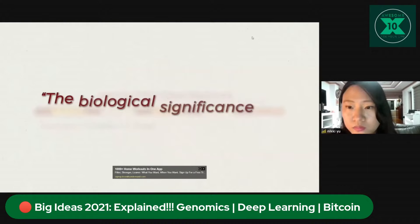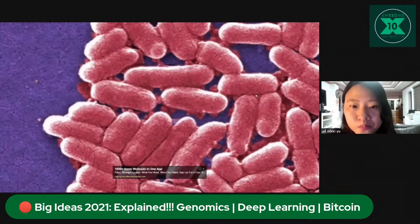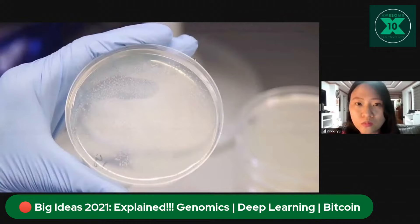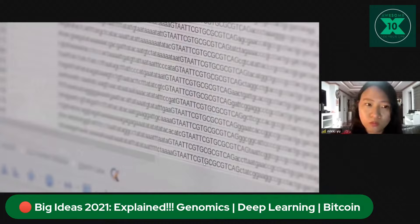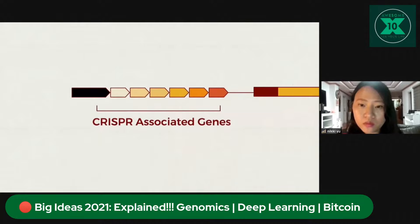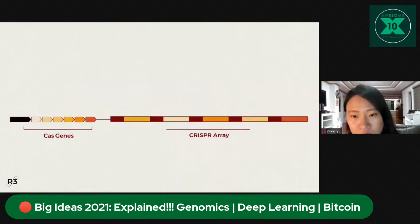Over the next decade, these repeating patterns were found in many different microbes. Eventually they were given a name: Clustered Regularly Interspaced Short Palindromic Repeats — CRISPR for short. But scientists still didn't know what they were for. Certain observations started emerging: CRISPR sequences were always next to specific enzyme-producing genes labeled as CRISPR-associated genes, or cas genes.